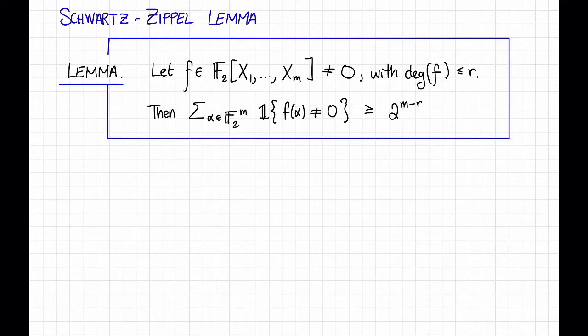So here's what the lemma says. Let F be an M-variate polynomial over F2 that is not identically 0, that is not all of its coefficients are 0, and suppose that the degree of F is at most R. Then the number of points in F2 to the M so that F of alpha is not equal to 0 is at least 2 to the M minus R.